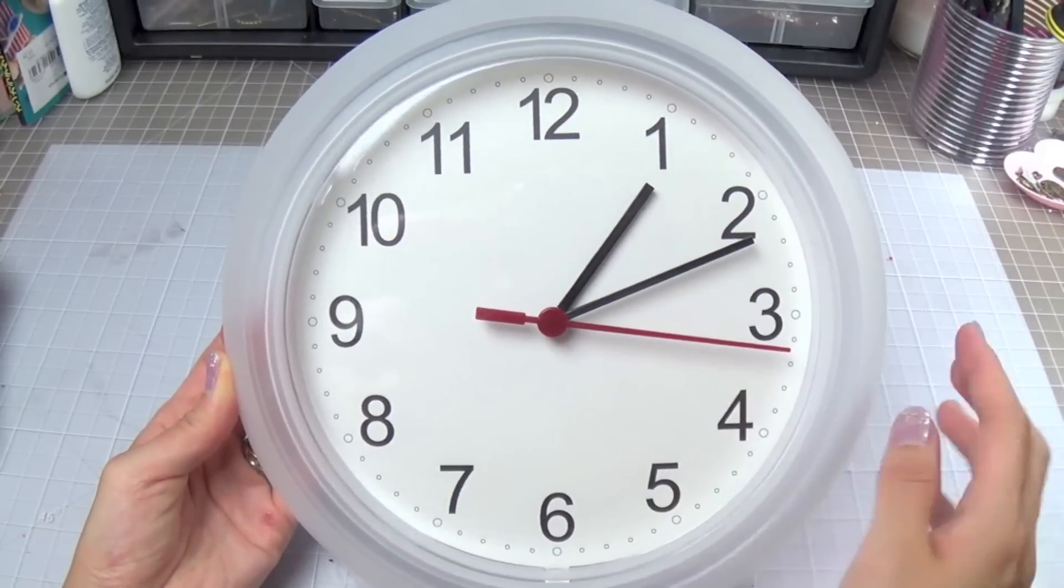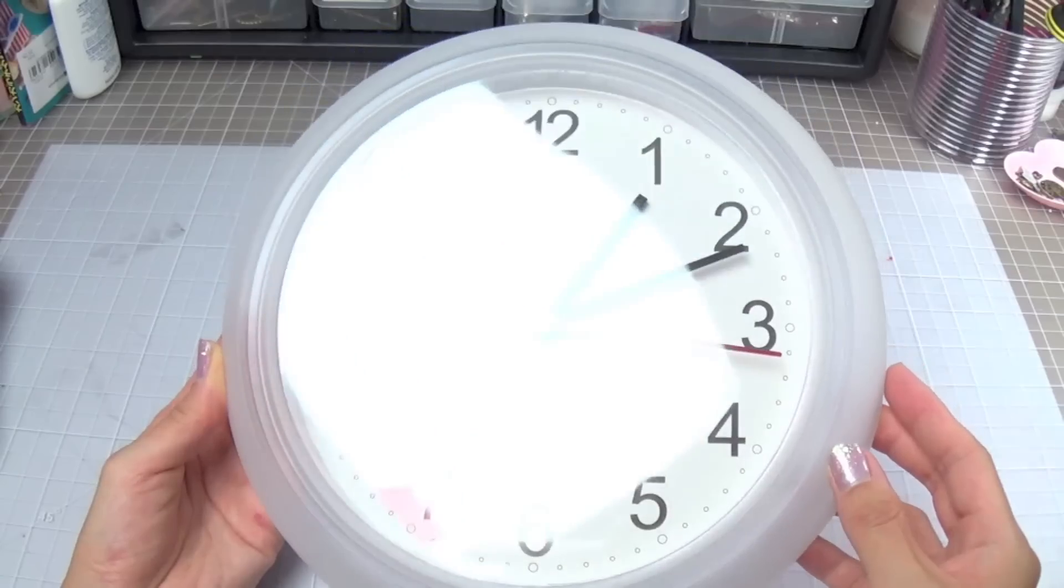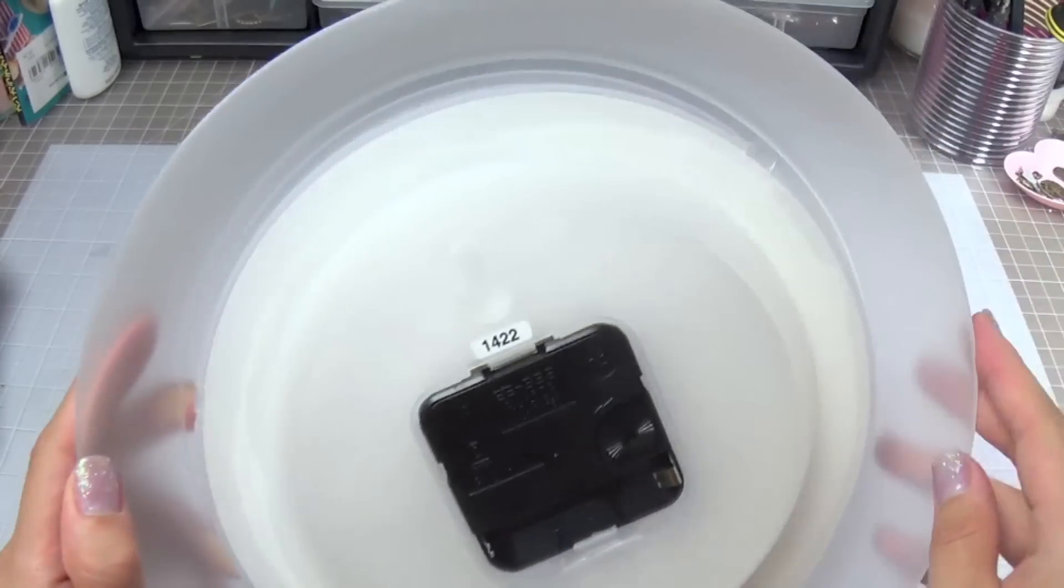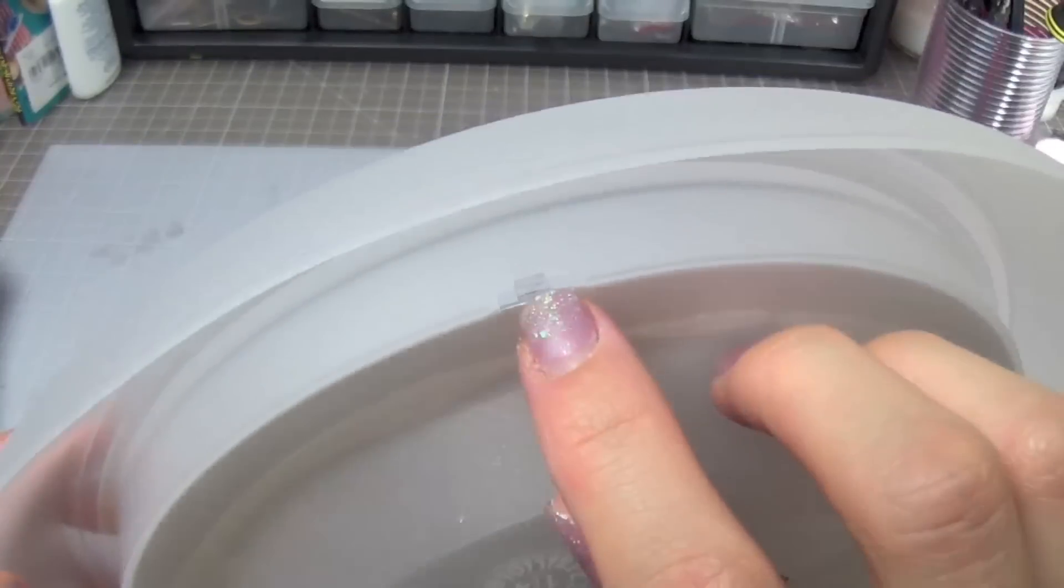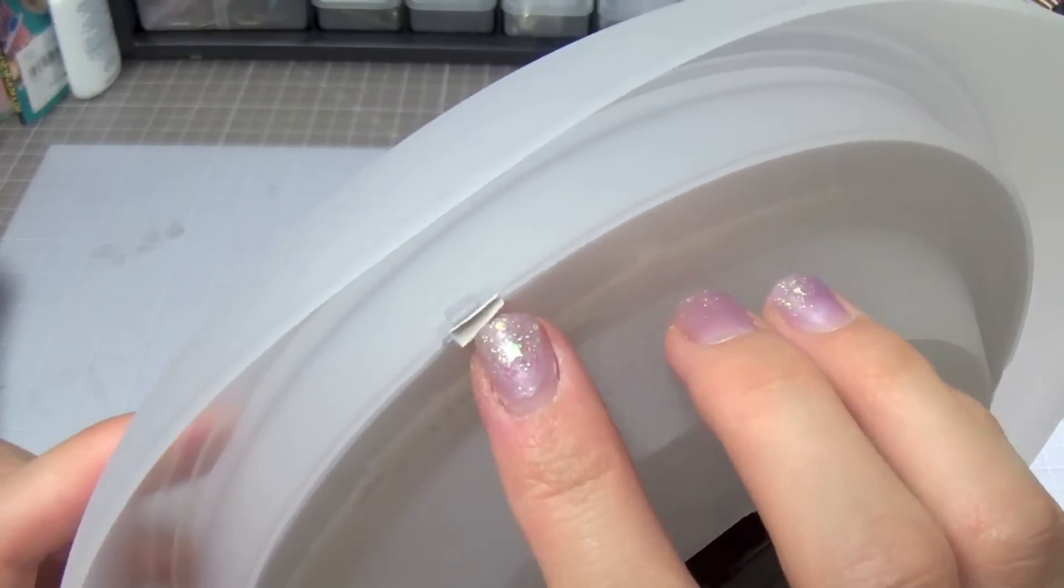Taking it apart is simple. First remove the front plastic part by going in from the back. There are these tabs that need to be pushed in and up. I find using a flat head screwdriver very helpful.